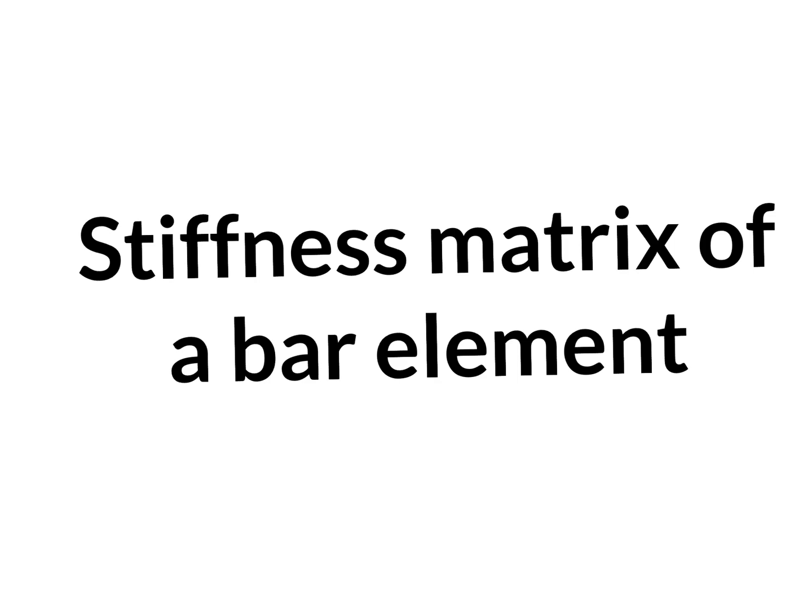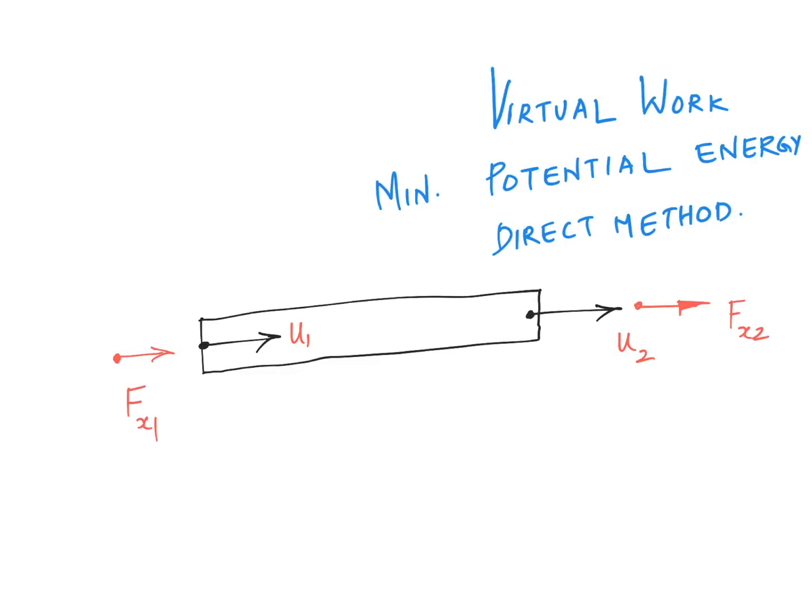In this video we will see a very elementary concept, how to derive the stiffness matrix of a bar element. In fact, there are different ways or methods using which you can derive the stiffness matrix for any element. A few of them are method of virtual work or method of minimum potential energy. Another method is direct method.